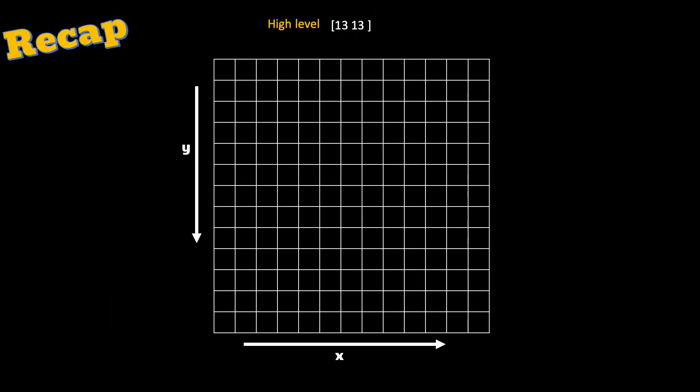I have taken the feature map of size 13 by 13. In my previous tutorials, I call it high level feature map, but whatever I will explain applies to feature maps of other sizes as well. Let's say that our object of interest has a center that falls in one of the grid cells. The center here in this slide is shown using a yellow dot.